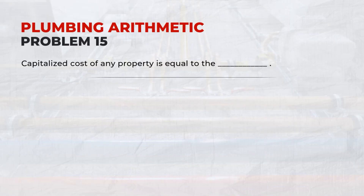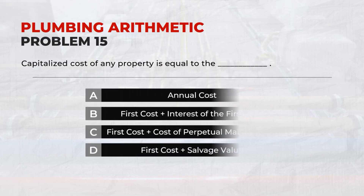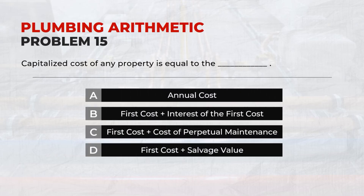The capitalized cost of any property is equal to: C. First cost plus cost of perpetual maintenance.